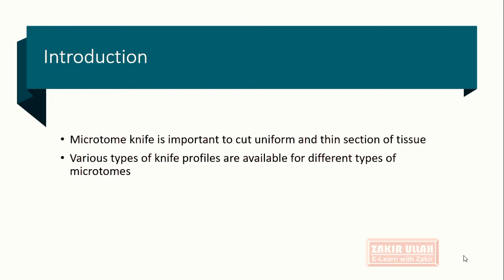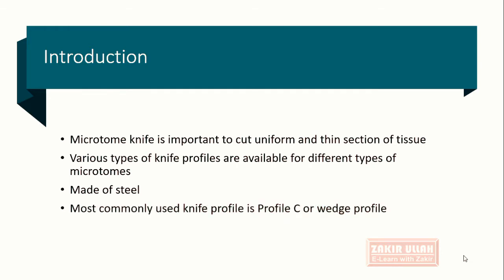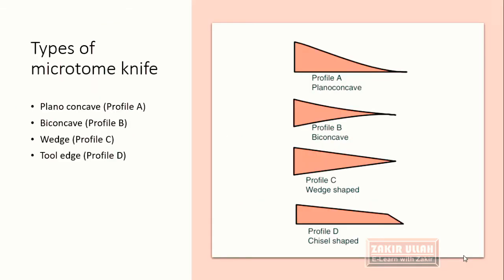Various types of knife profiles are available for the different types of microtome, and these microtome knives or blades are mostly made up of steel. The different profiles are: Profile A, the plano concave; Profile B, the biconcave profile; Profile C, the wedge shape; and Profile D, the tool edge.